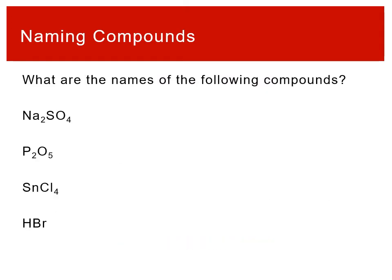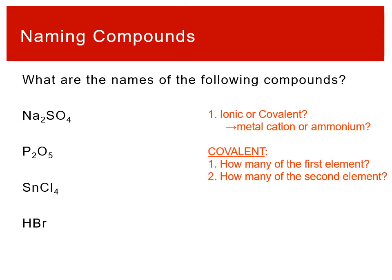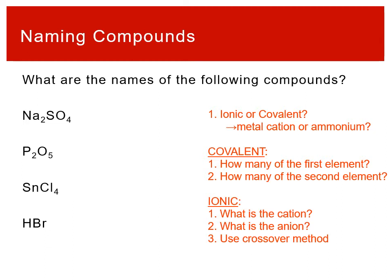Let's get a bit more practice. What are the names of the following compounds? Na₂SO₄, P₂O₅, SnCl₄, and HBr. I always want to start with: is it ionic or covalent? Which really means we're looking for a metal cation or ammonium. If it's covalent, how many of the first element, how many of the second element? If it's ionic, what's the cation, what's the anion? You can use the crossover method to figure out those names.